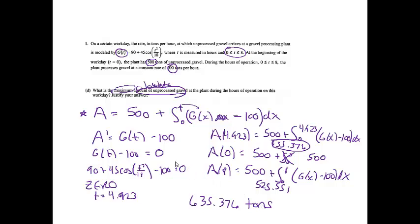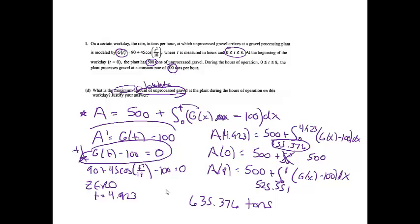The maximum amount of unprocessed gravel is 635.376 tons. For points: one point for setting the derivative G of t minus 100 equal to 0 somewhere on your paper, one point for arriving at 635.376 tons, and one point for justification by evaluating at the critical number and endpoints. This part is worth three points.